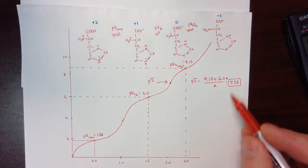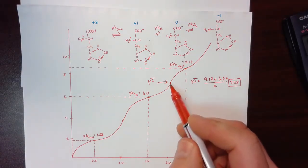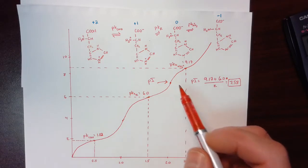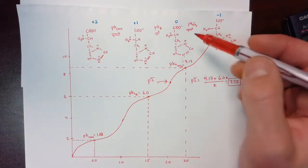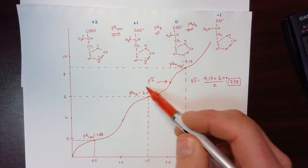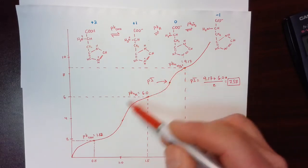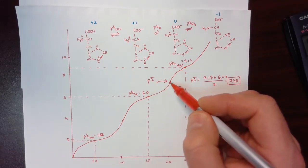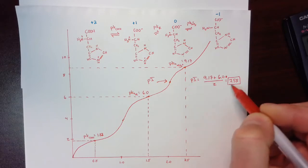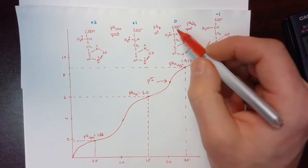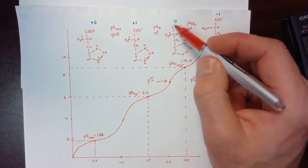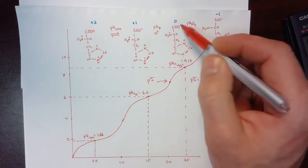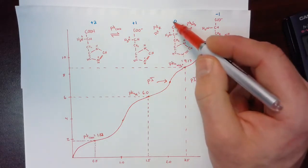And so 7.58 is the pI of histidine. And the pI is special because at the pI, at this pH value, remember these are all pH values, at this pH value of 7.58, the histidine will be in the form where it has zero charge. Again, not all of it,